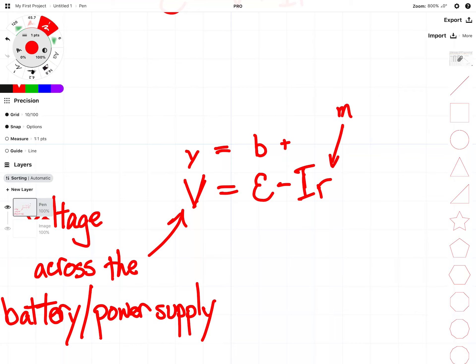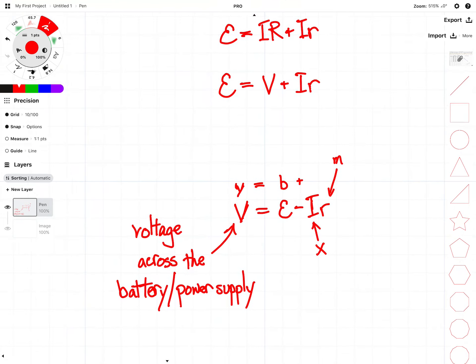And of course we have our x value, which is in this case current. So there it is: y equals mx plus b.